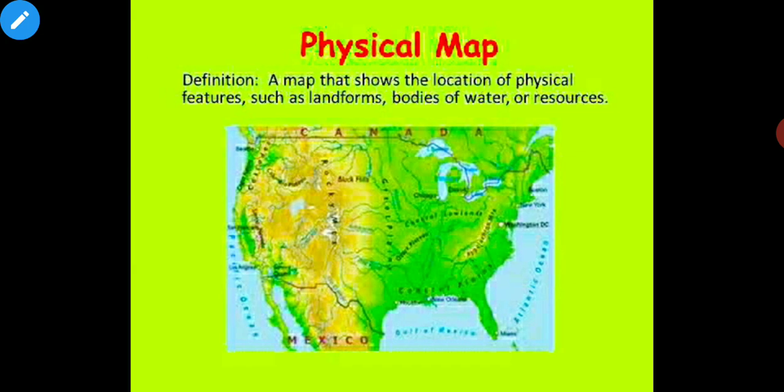Firstly, a physical map is a map that shows the location of natural or physical features such as landforms, bodies of water, or resources. A physical map shows the location of mountains, plateaus, plains, oceans, rivers, lakes, seas, and so on.